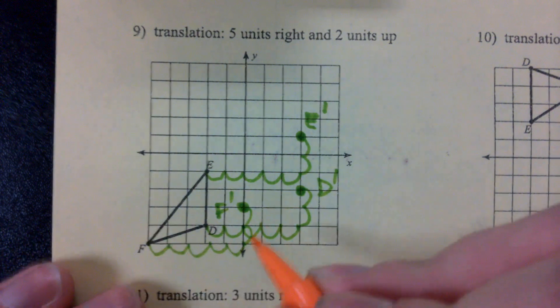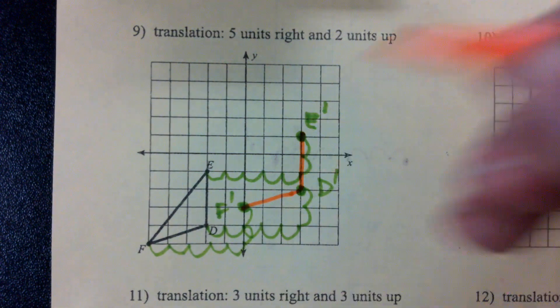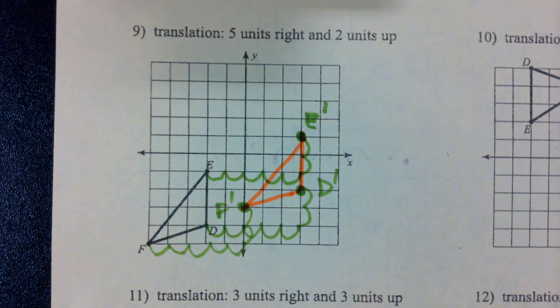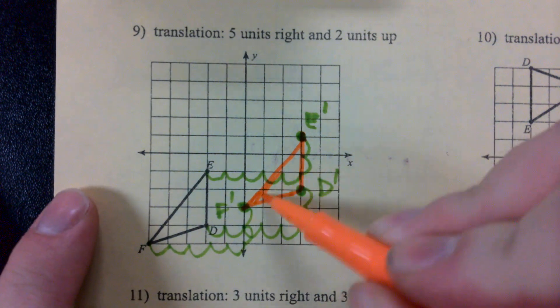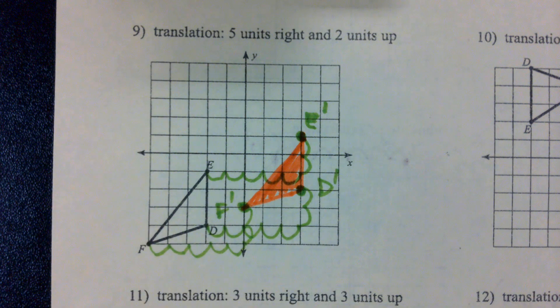Now we're going to connect up all of those prime points. And that right there is our image. D prime, E prime, F prime. That orange triangle right there.